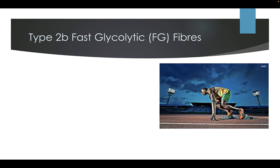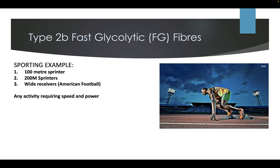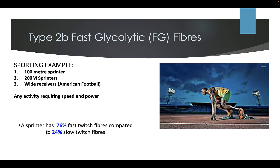Type 2B fast glycolytic fibres sporting examples include 100m and 200m sprinters, wide receivers in American football — any activity requiring speed and power. A sprinter has 76% fast twitch muscle fibres compared to 24% slow twitch muscle fibres.